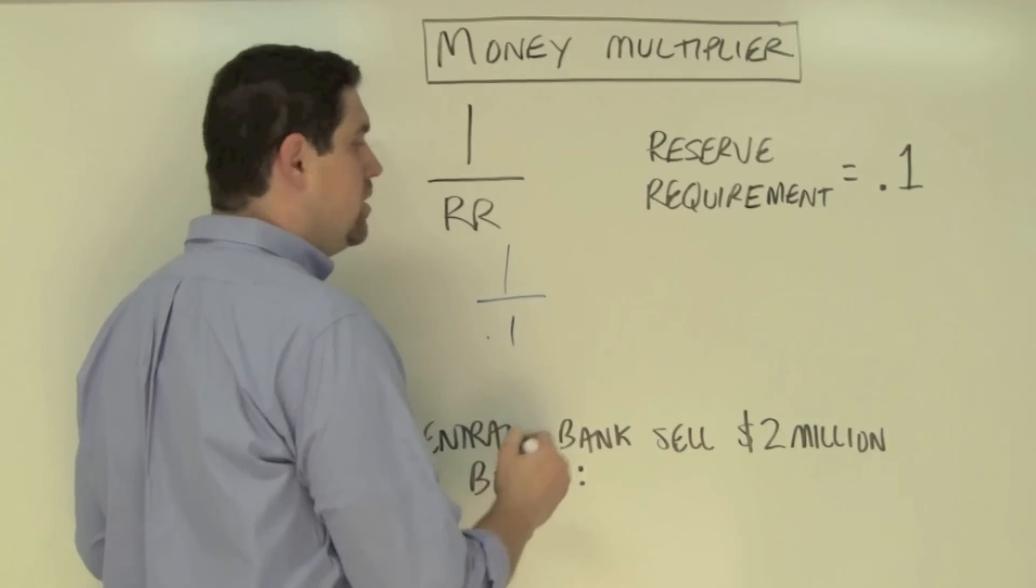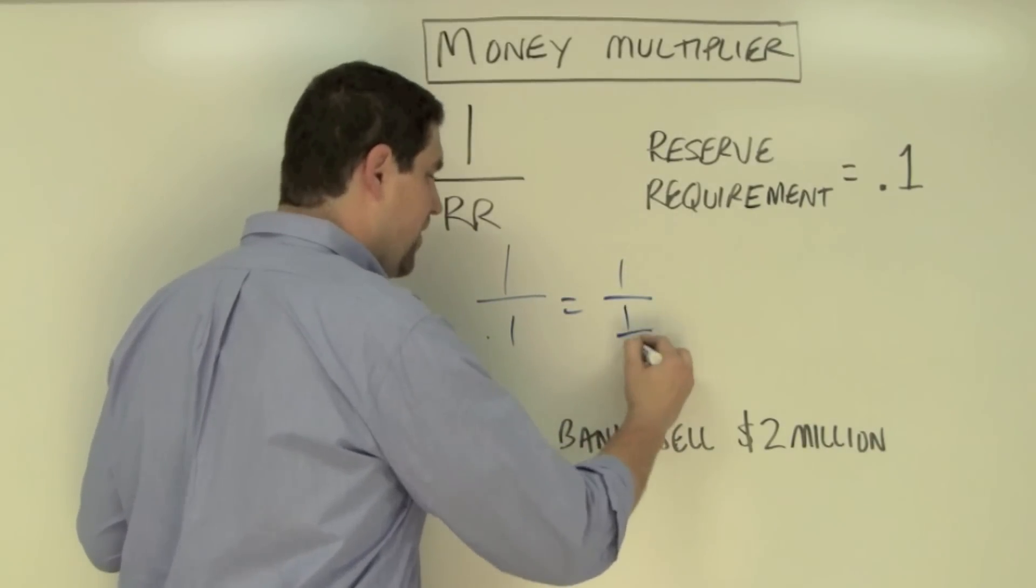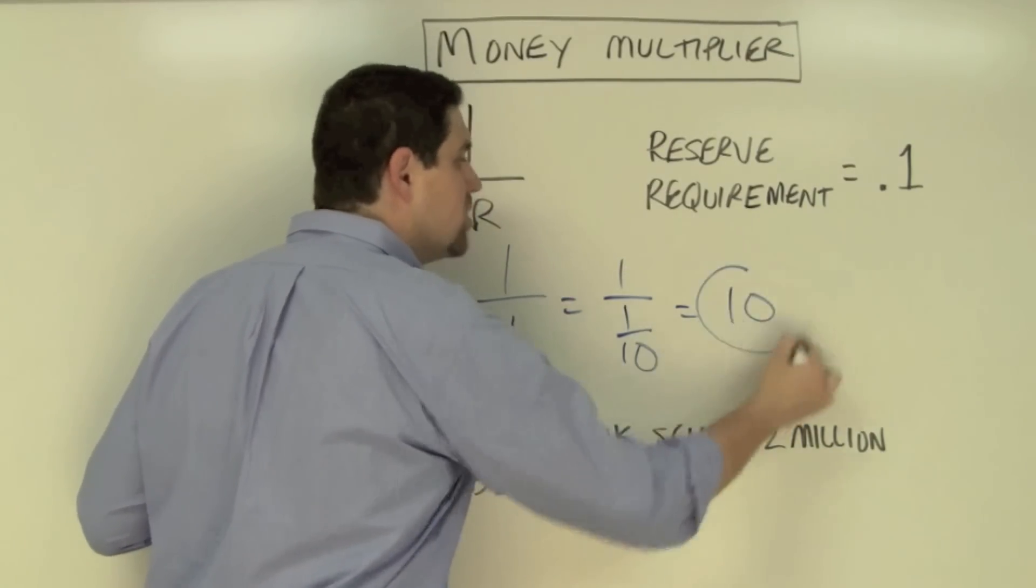So to calculate the multiplier, it's 1 over 0.1, which is 1 over 1 tenth, which is 10. The multiplier is 10.